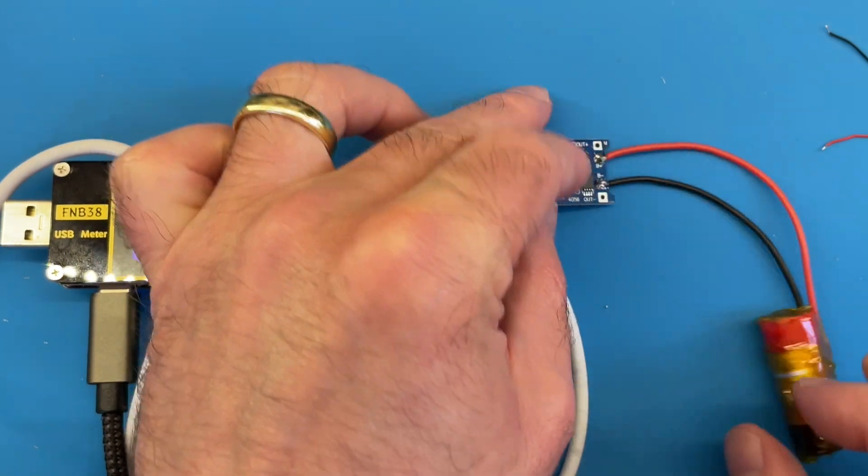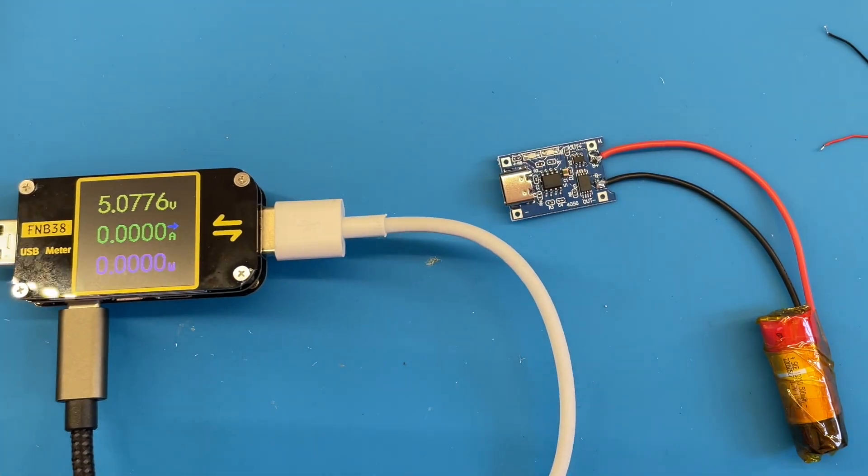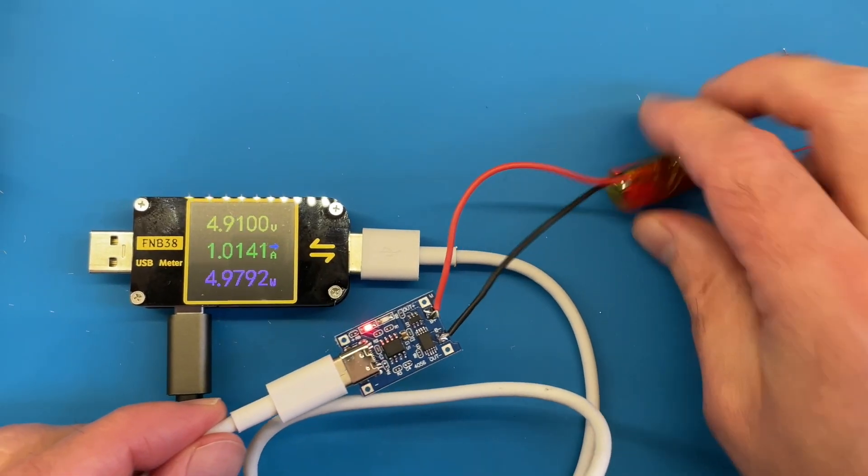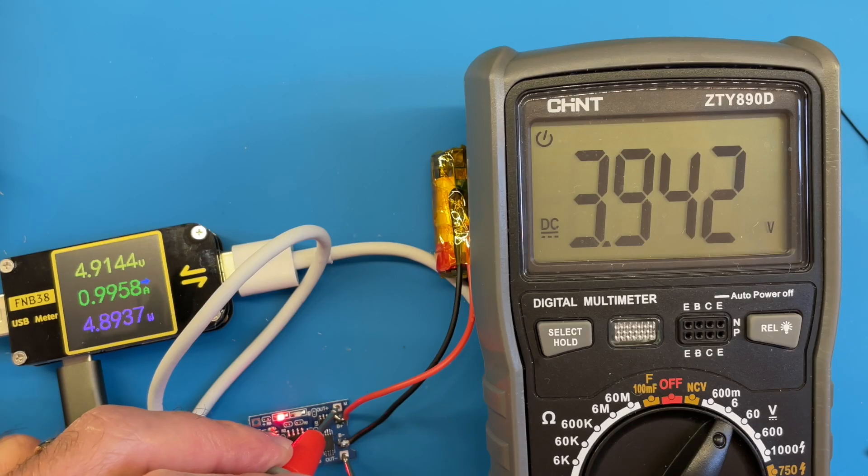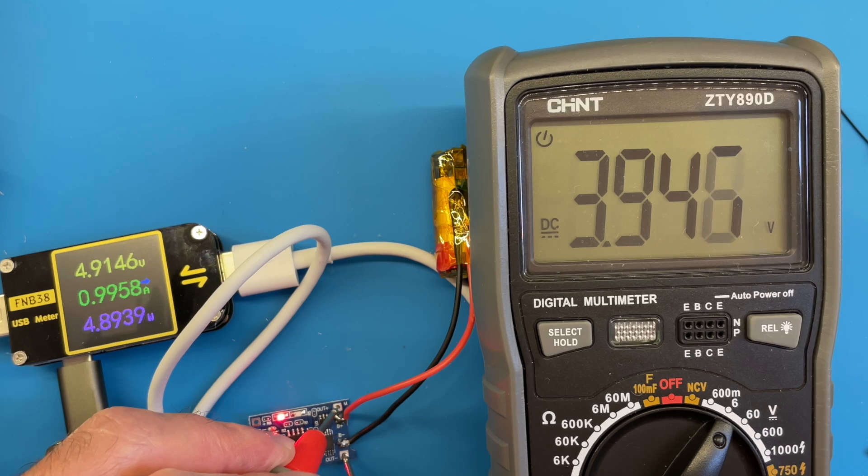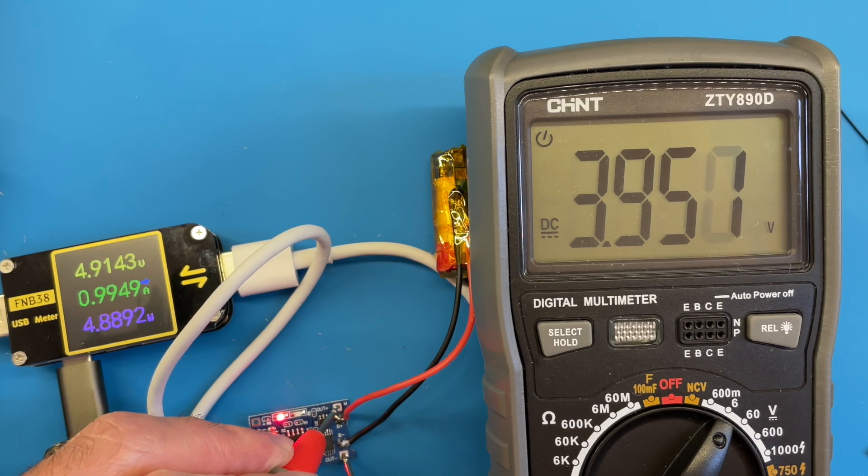So I've wired it up to a little battery charger. Let's see if it actually charges. Well, that's pretty promising. Charging pretty quickly at one amp. And we can see the voltage going up. So this battery looks perfectly decent. So I'll leave it to charge and then we'll test the capacity.